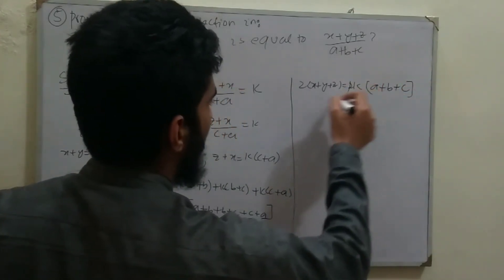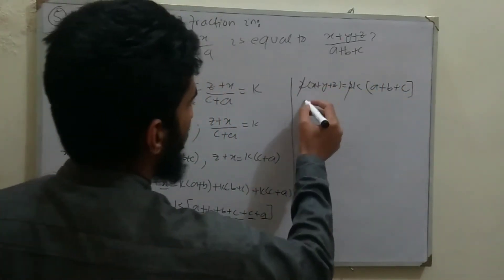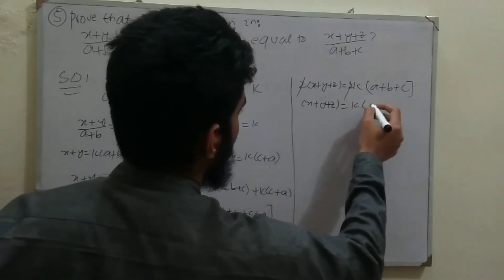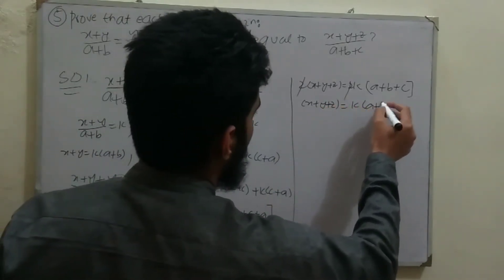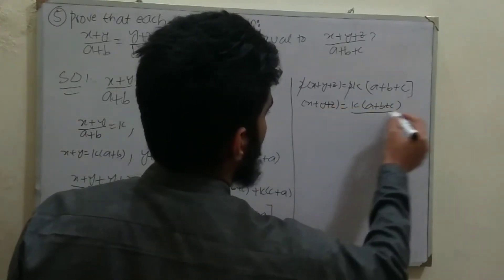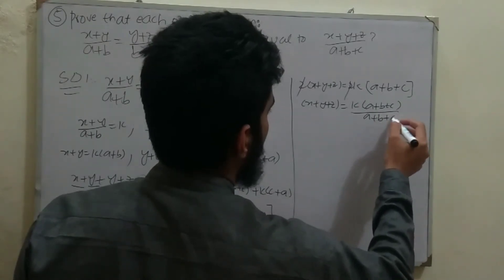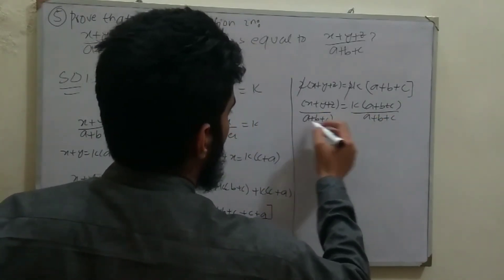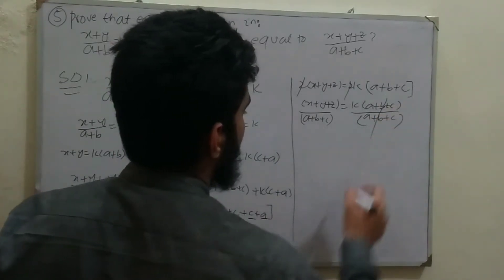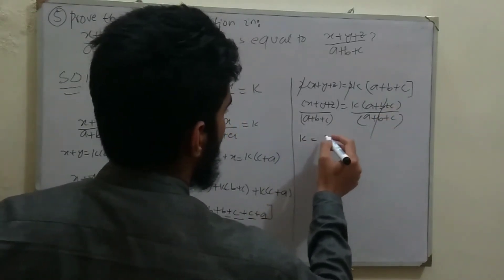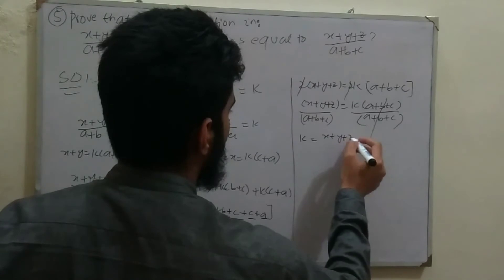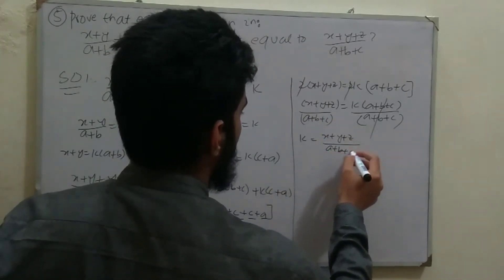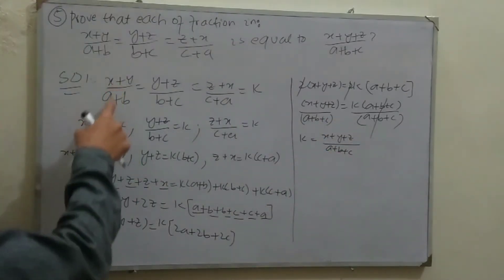Cancelling 2 from both sides gives x+y+z = k(a+b+c). Dividing both sides by (a+b+c), we get k = (x+y+z)/(a+b+c).